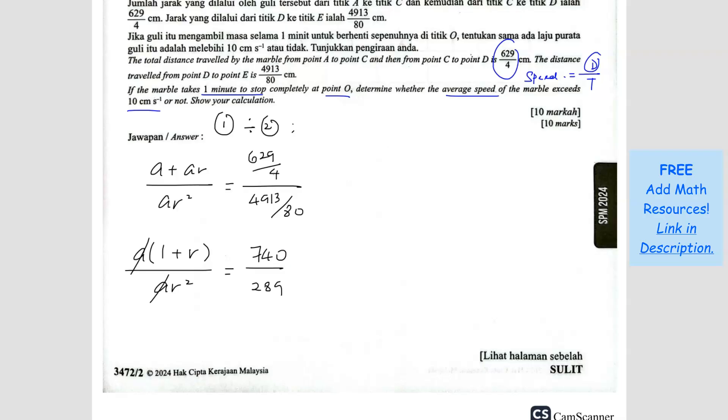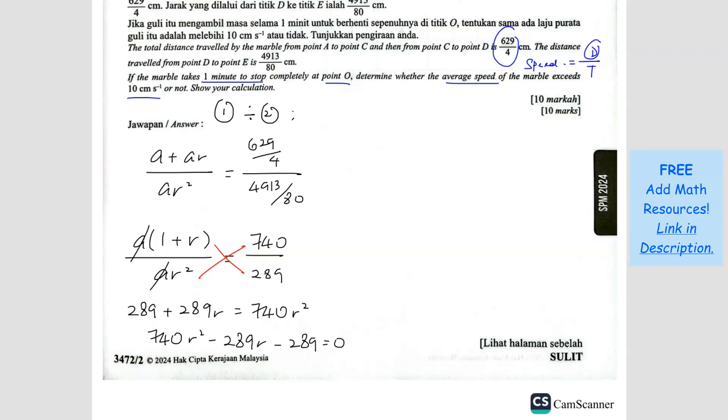It's just a faster way to solve. Now that we have gotten this, we can cross multiply. When we cross multiply, we get 289 plus 289R equals 740R square. Now we have a quadratic. I'm going to bring everything to the right side: 740R square minus 289R minus 289 equals 0. Now I can factorize. You will get 20R minus 17 and 37R plus 17. So R equals 17 over 20 and the other R will be negative 17 over 37.